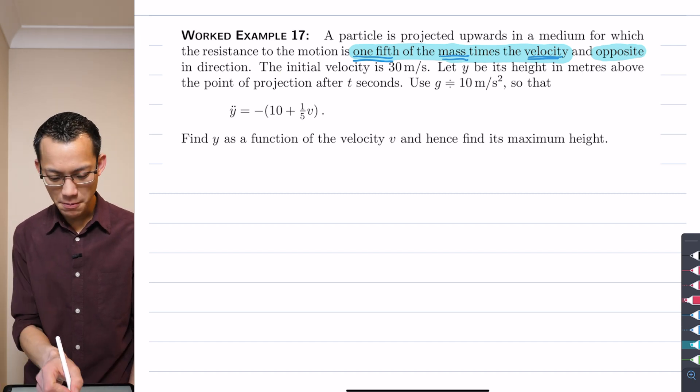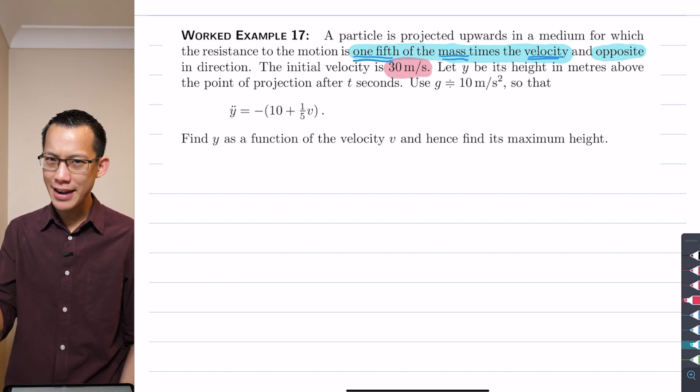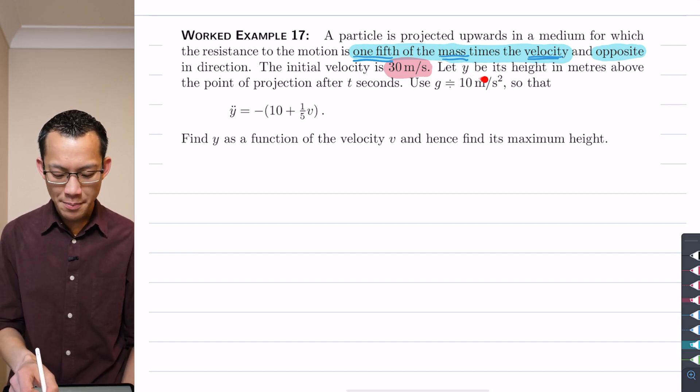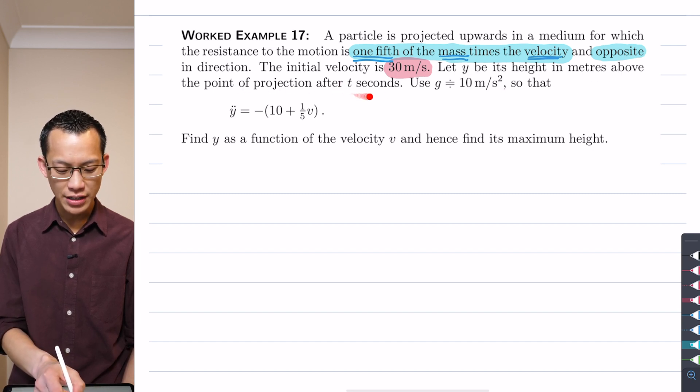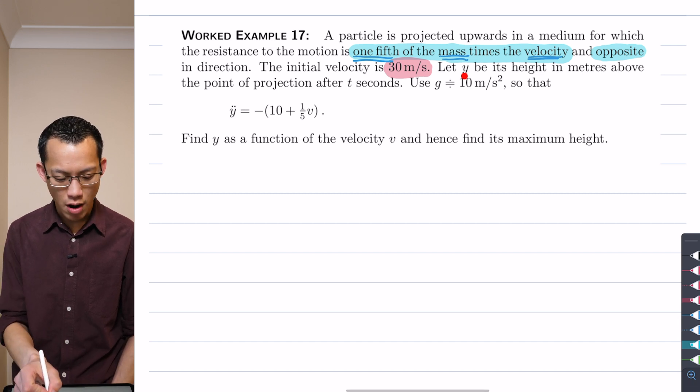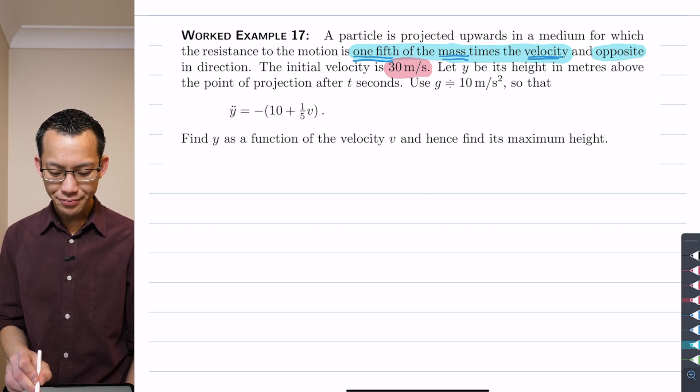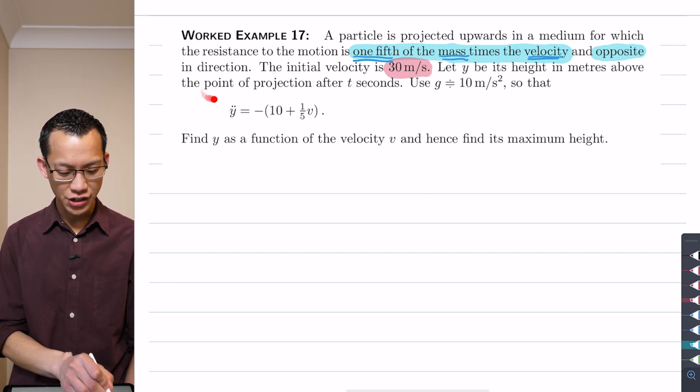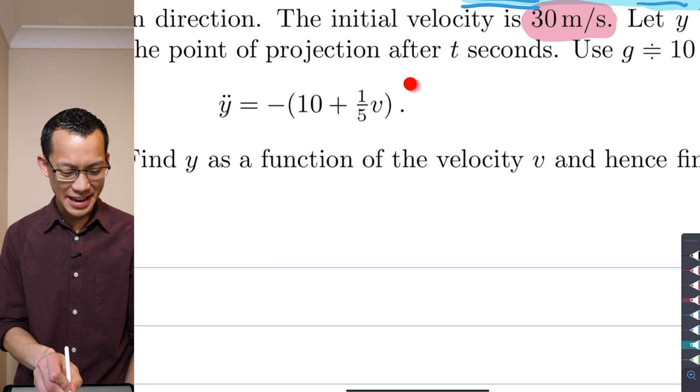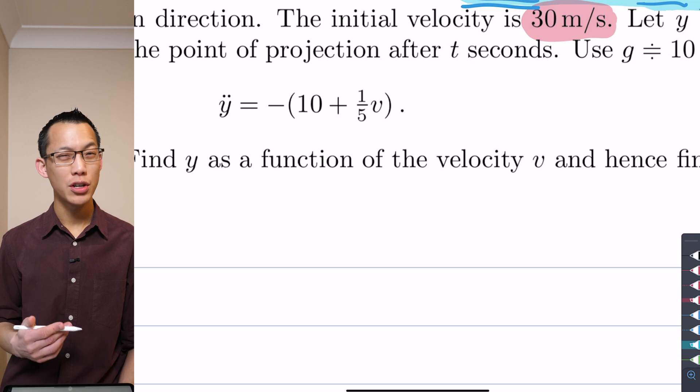Okay let's keep going. The initial velocity is 30 meters per second. That's important to work out. We're going to have to integrate and we'll use that to solve for our constant of integration. Let y be its height in meters above the point of projection after t seconds. So t equals 0 is our initial condition and y will be 0 when it's projected upwards in a medium. We're setting gravity to be 10 and then they provide to us very nicely, they actually in this case give us the acceleration equation. This is what it should be, right?